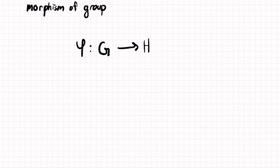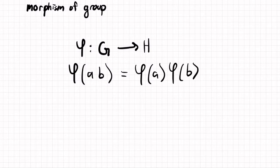And this function is a group homomorphism if the following holds, which is phi of A times B is equal to phi of A times phi of B, where A and B are in the group G.